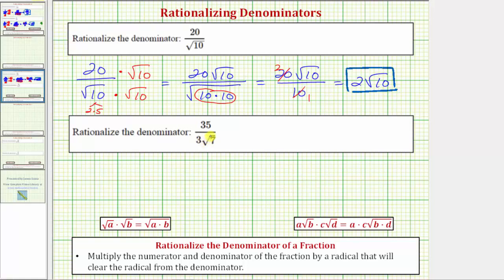Looking at our second example, we have 35 over three square root seven, or 35 divided by three square root seven. Again, the first thing to recognize is that the denominator is irrational because the square root of seven does not simplify perfectly.